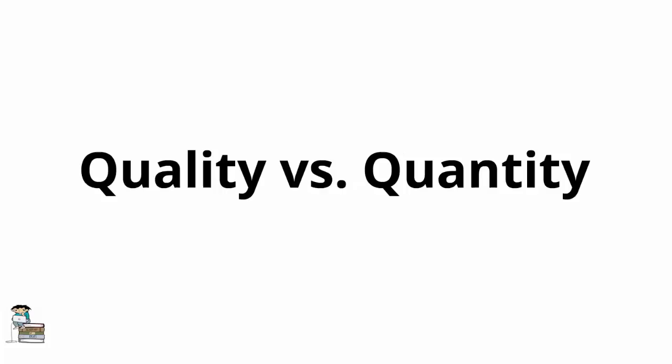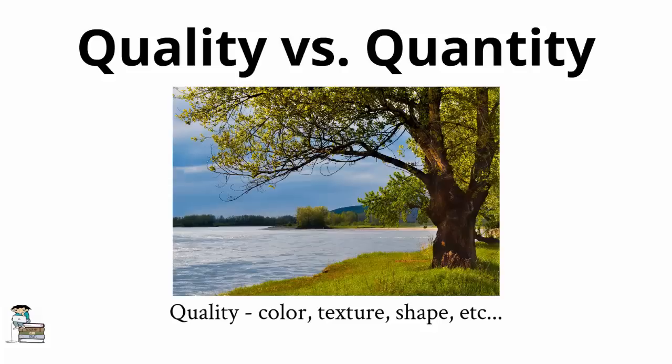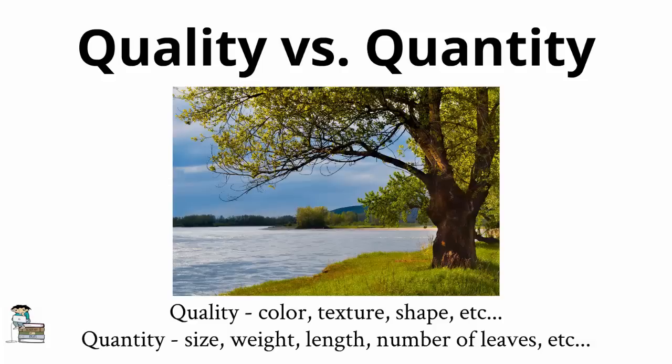The scientific revolution also saw a decline in emphasis on qualities, a marking feature of Aristotle's natural philosophy, to an emphasis on quantity. To make the distinction between quantity and quality clear, a good analogy is to think of the different ways one could describe a tree. As a description, one could offer the tree's qualities, such as its color, texture, or shape. Or, alternatively, one could describe the tree using quantities, such as its weight, height, the length of its branches, the number of leaves it has, and so on.